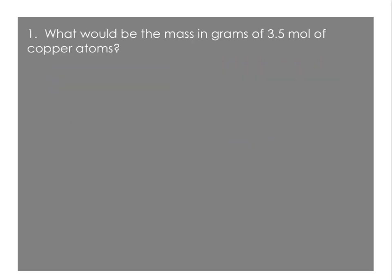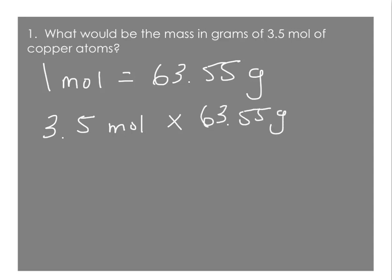Now we're going to work on some sample problems where we convert back and forth between grams and moles. In this first problem, we want to know what the mass in grams would be of 3.5 moles of copper atoms. The periodic table gives us molar mass, the mass of 1 mole. So for copper, 1 mole has a mass of 63.55 grams. We're always going to round molar masses to 2 decimal places. Now we don't have 1 mole, we have 3.5 moles. So 3.5 moles times 63.55 grams per mole will give us the mass of 3.5 moles. We get 222 grams.